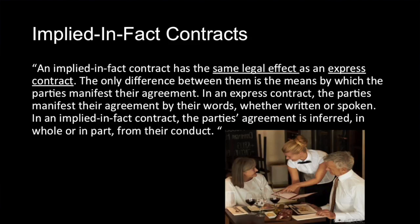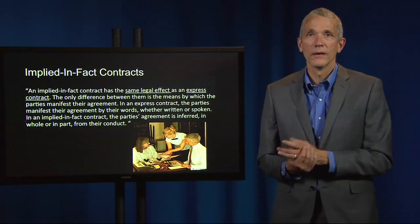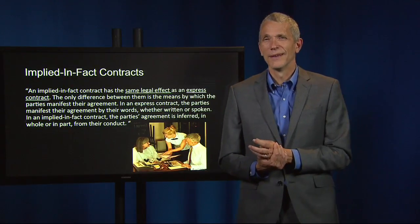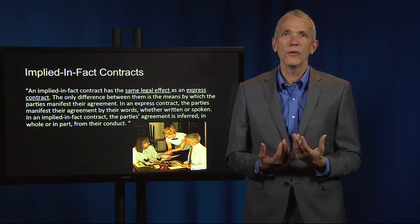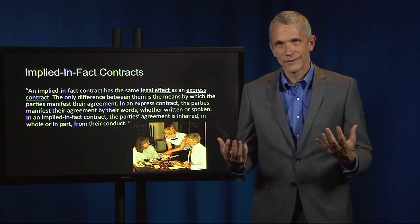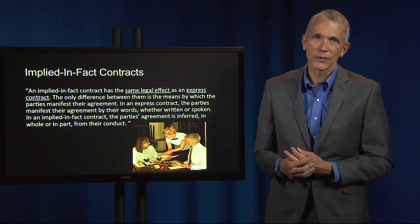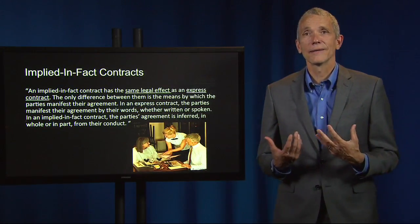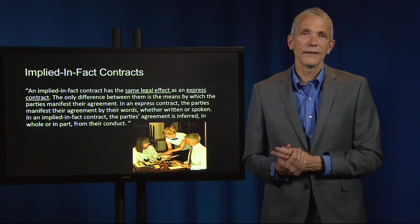An implied-in-fact contract is a contract where the party's agreement is inferred from their conduct rather than by explicit words. If you go into a restaurant and the server asks what you'll have, and you respond 'give me a pastrami on rye, please,' do you have an explicit contract? No—nobody promised anybody anything. You never explicitly promised the waitress that you would pay. But the lack of an explicit agreement is not really relevant. You're going to be on the hook to pay for the food because the conduct of the overall circumstances—sitting down at a table in a restaurant and ordering food off the menu—made you contractually liable for an implied-in-fact contract.